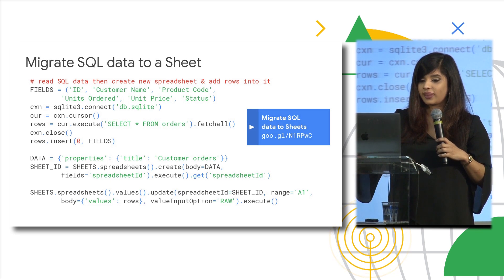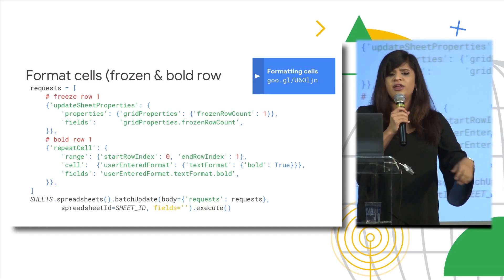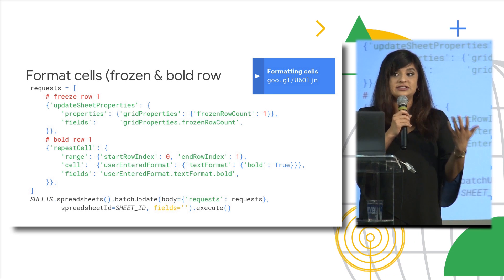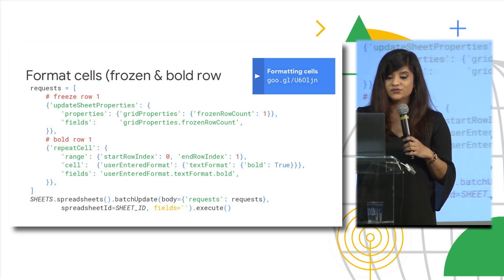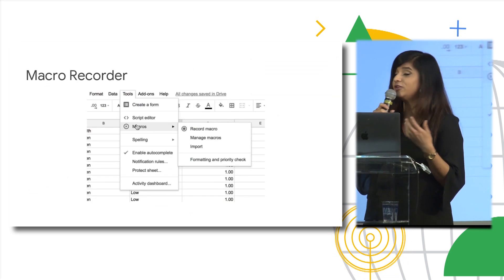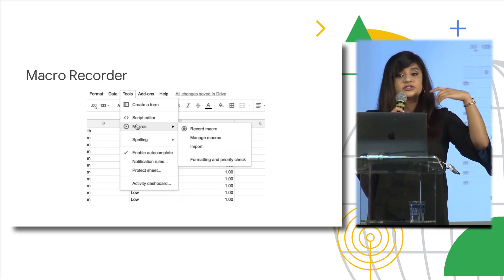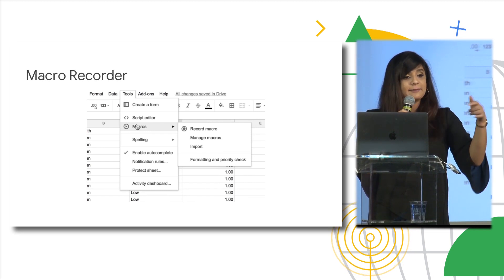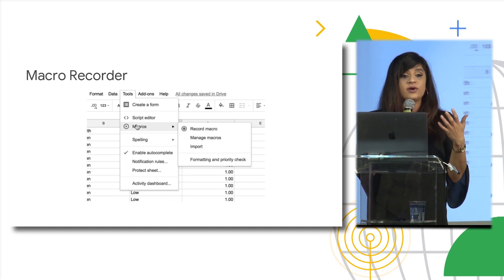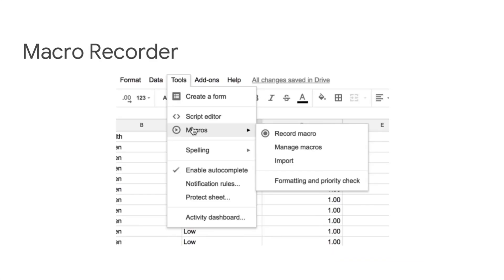You can even do things like format cells — say you want to do a crazy color scheme but don't want to go row by row changing colors across thousands of rows. If you use macros, you can record them in Sheets and it will actually generate Apps Script code for you. You can then play around with that Apps Script code, share it with multiple Sheets, share it with the people you work with, and make everything you're doing faster.